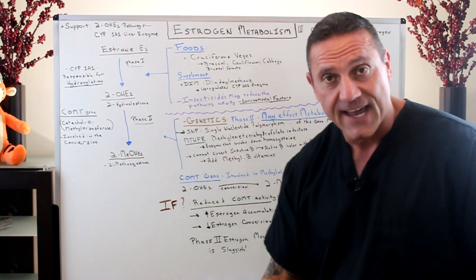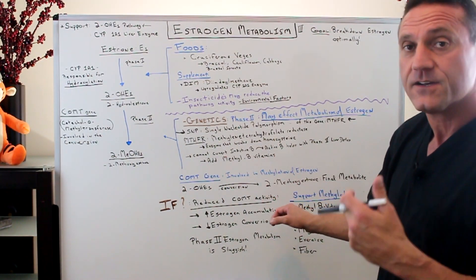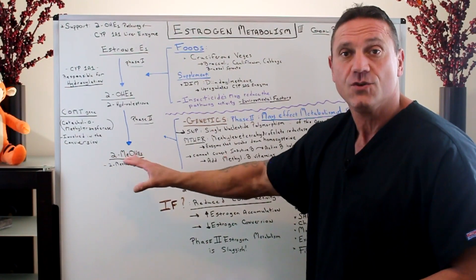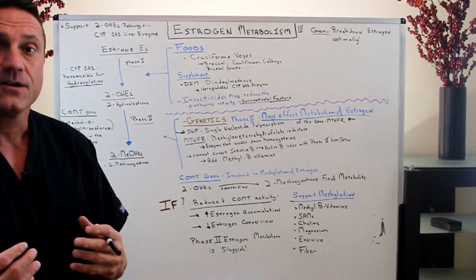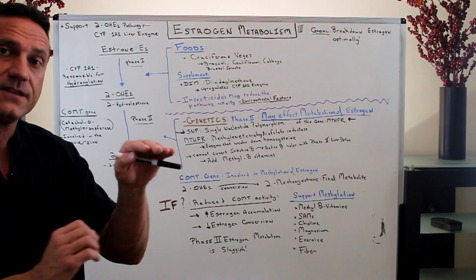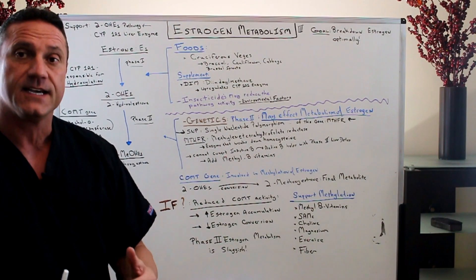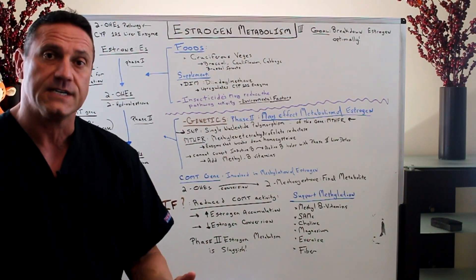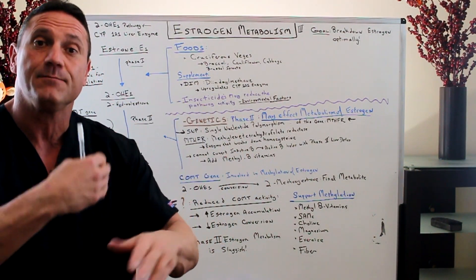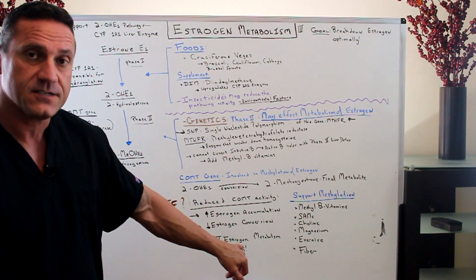What if you test positive for that? It's not the end of the world. It's involved in the methylation of estrogen — the final pathway, the final conversion. What happens if you have reduced COMT activity? You're not going to convert to the end product. You're going to increase estrogen accumulation — you're not going to be able to utilize the estrogen that's being produced. You're going to have decreased estrogen conversion. You may be producing a lot of estrogen, but it's not being utilized into the cell. The estrogen metabolism becomes sluggish.